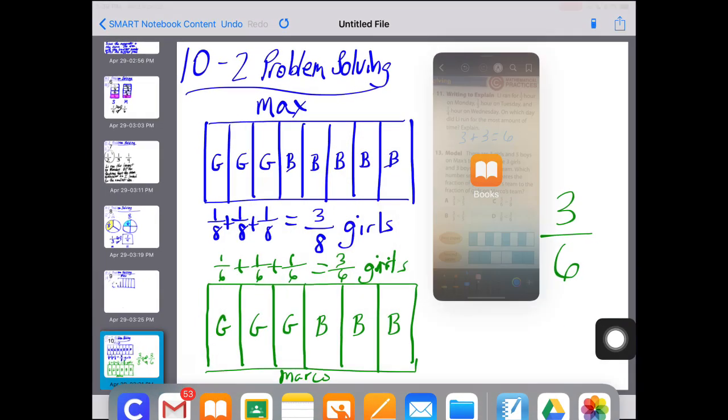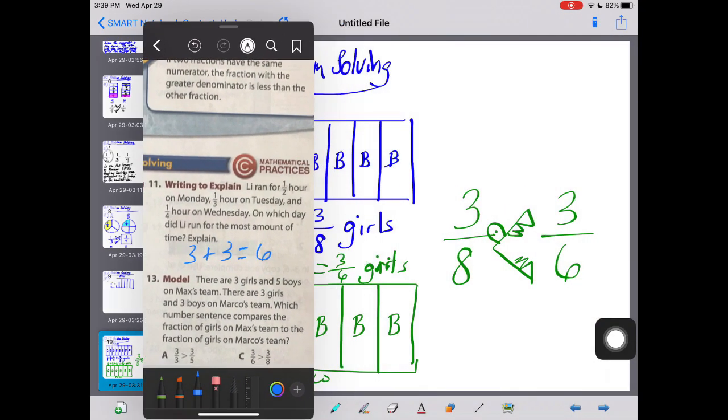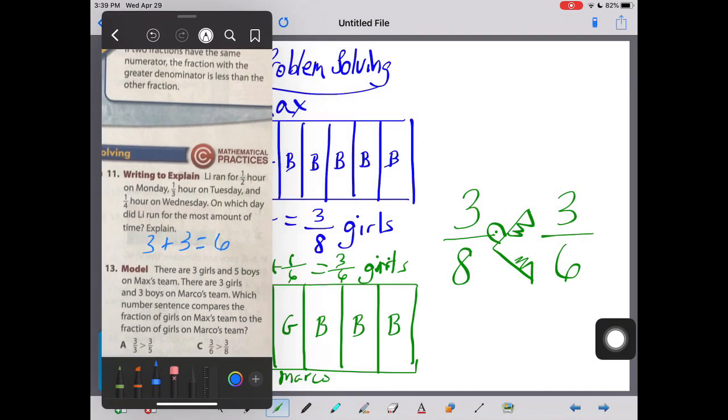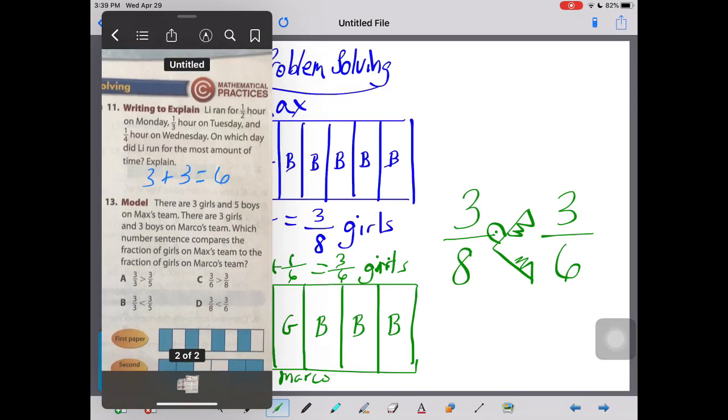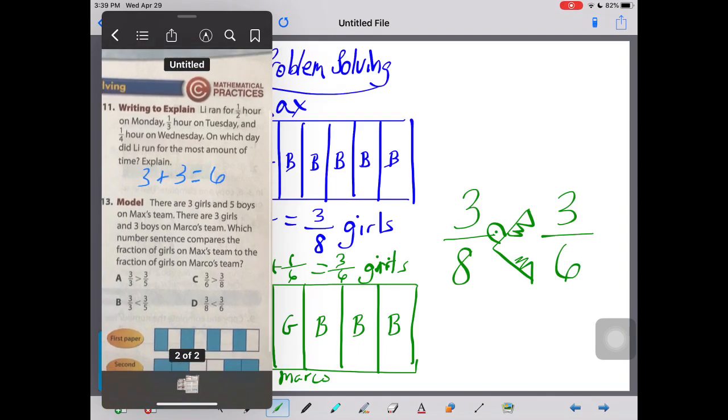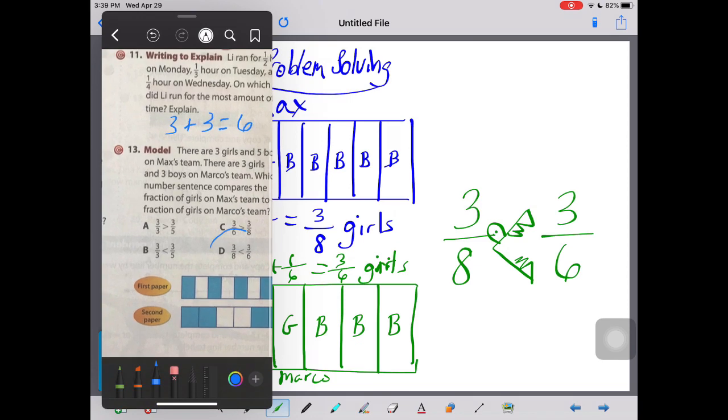So we should be looking for the answers as three eighths is less than three sixths. And let's take a look here and see where it says that. It looks like D. D is providing us with that answer, three eighths is less than three sixths. One more to go, guys. Here we go.